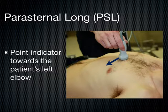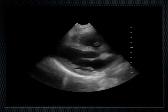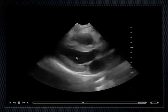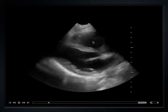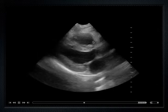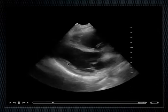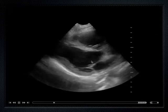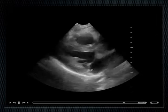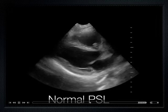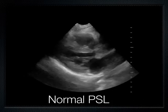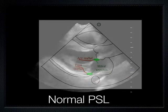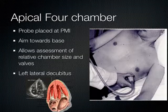In the parasternal long axis with the indicator to the left hip, this is what it looks like. When you get the parasternal long, you see the left atrium, left ventricle, aortic outflow tract, right ventricle, and the interventricular septum. This is the posterior wall. This is the mitral valve here — the anterior leaflet and the posterior leaflet's down here. This is a normal parasternal long axis of the heart, with a quick overlay to review some of the anatomy.